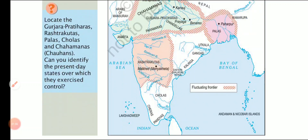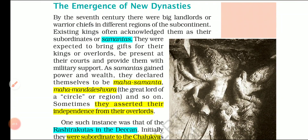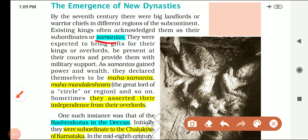Moving on to the next section — the emergence of new dynasties. Towards the end of ancient times, there was a decline of centralized emperors. We have also seen the Samanta system. The Samanta system is a military system in which warrior chiefs maintained armies locally and supplied soldiers to the king for fighting wars. In return, the king would allocate them certain land as grants, and tax from these lands could be collected for the maintenance of their armies.